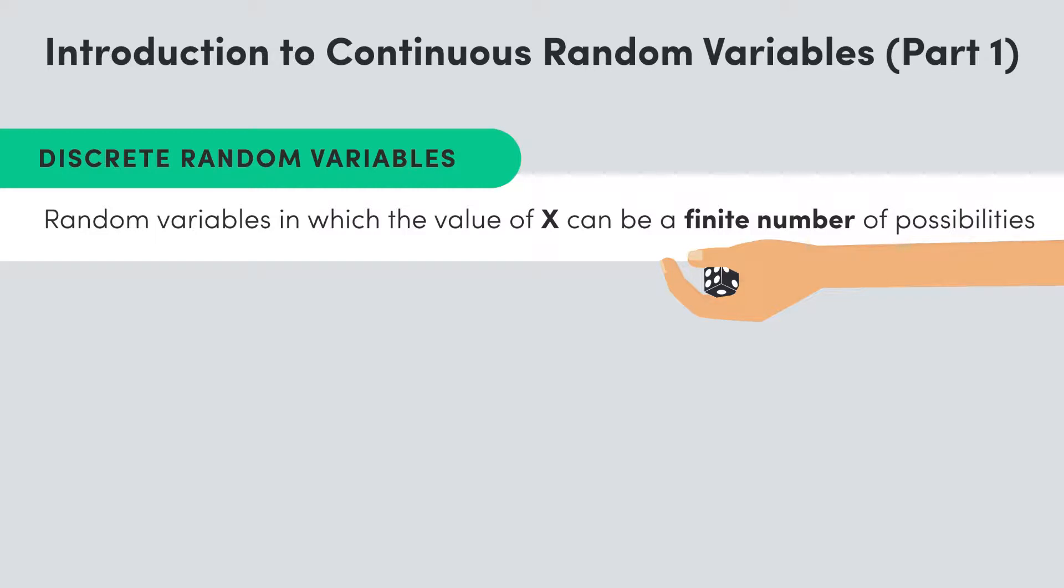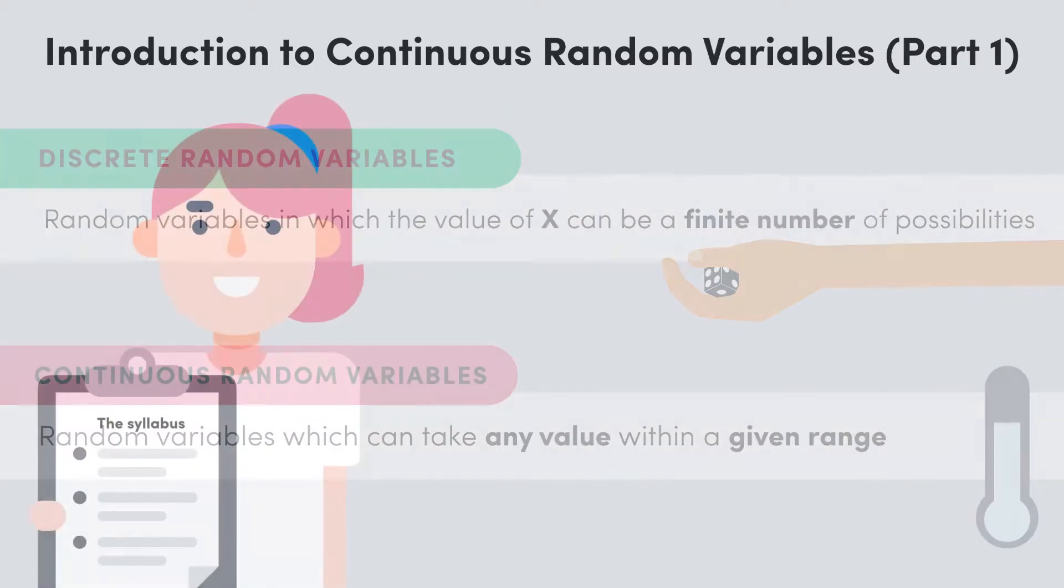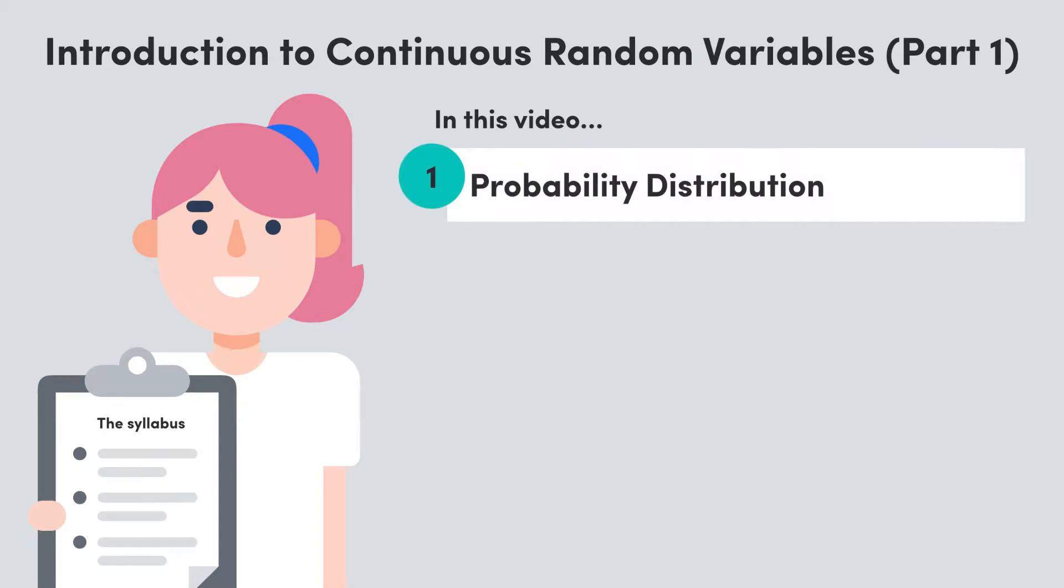But the focus for this video is on describing variables that can take an infinite number of values in a given range, which comes with a new set of challenges. So we'll start by looking at how we define the probability distribution of a continuous random variable, and the important details that go along with that.